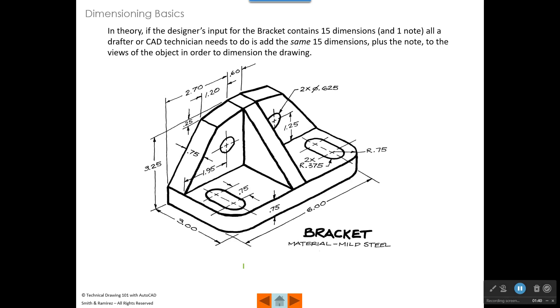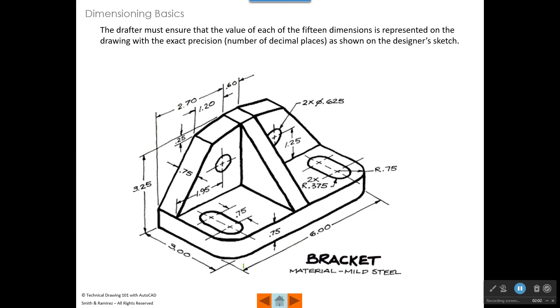In theory, if the designer's input for the bracket contains 15 dimensions and one note, all the drafter or CAD technician has to do is make sure to add the same 15 dimensions plus the note to the views of the object, and then your part would be fully dimensioned. But it's a little more complicated than that. The drafter must also ensure that the value of each of the 15 dimensions is represented on the drawing at the same precision. And when we talk about precision, we're talking about the number of decimal places. So we see this 2.70 that is a two place precision on that dimension right there. The 0.60 is a two place precision.